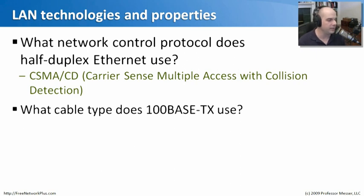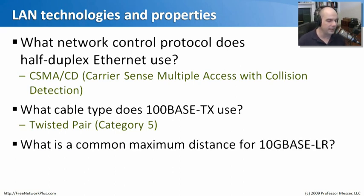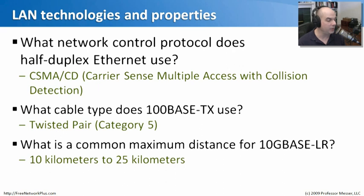Next question: what cable type does 100BASE-TX use? We see the T, so there must be twisted pair cabling, and to go at 100 Mbps, we know we need at least Category 5. The last question: what is a common maximum distance for 10GBASE-LR? LR stands for long range, meaning we can go anywhere from 10 kilometers, perhaps even as far as 25 kilometers, as long as we have the right kind of fiber and hardware on both ends.